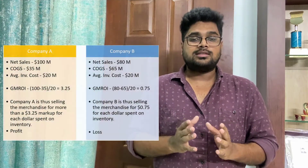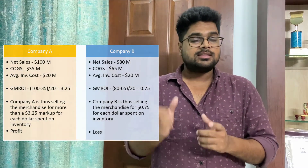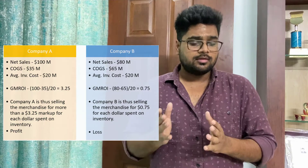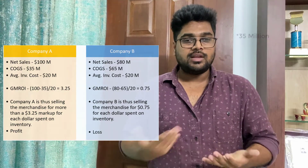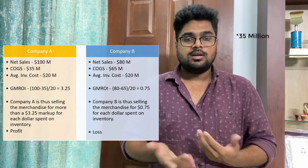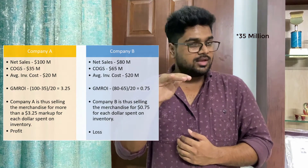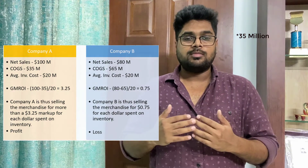Let's say there are two companies. Company A has net sales of $100 million, its cost of goods sold is $15 million, and its average inventory cost is $20 million. So ($100M − $15M) ÷ $20M gives you approximately 3.25 as the GMROI ratio for Company A.